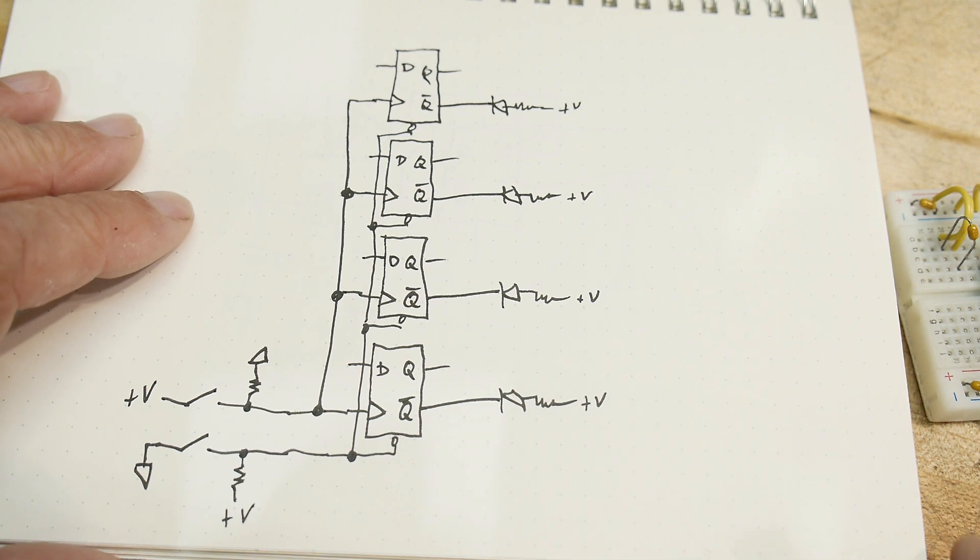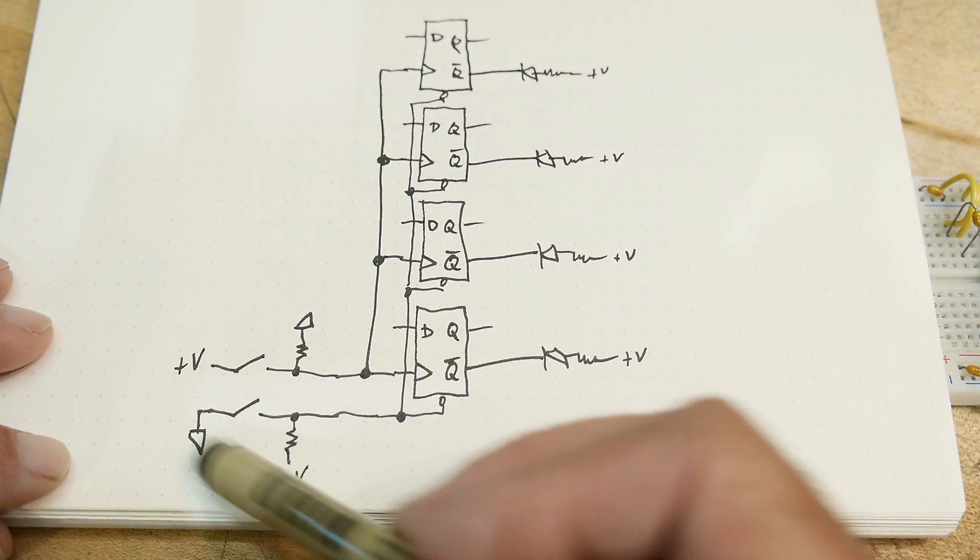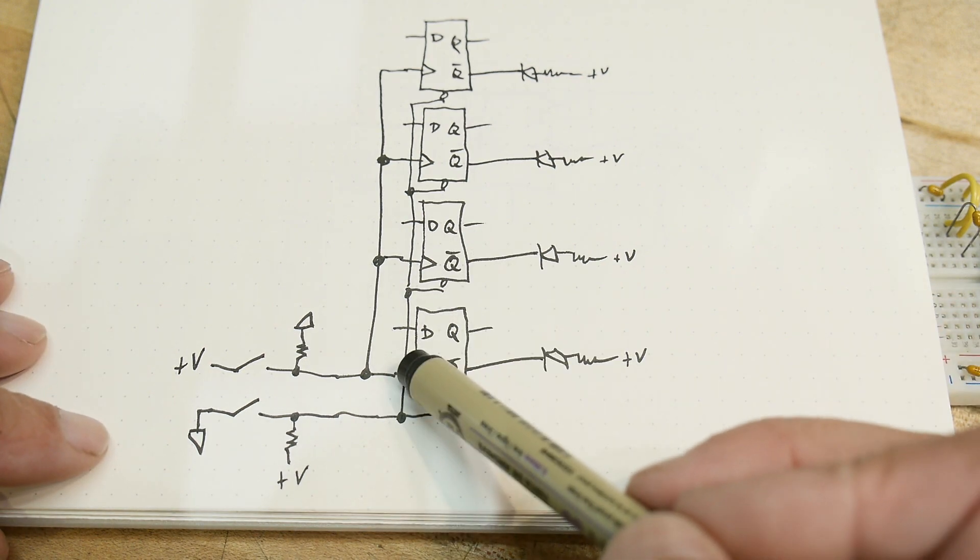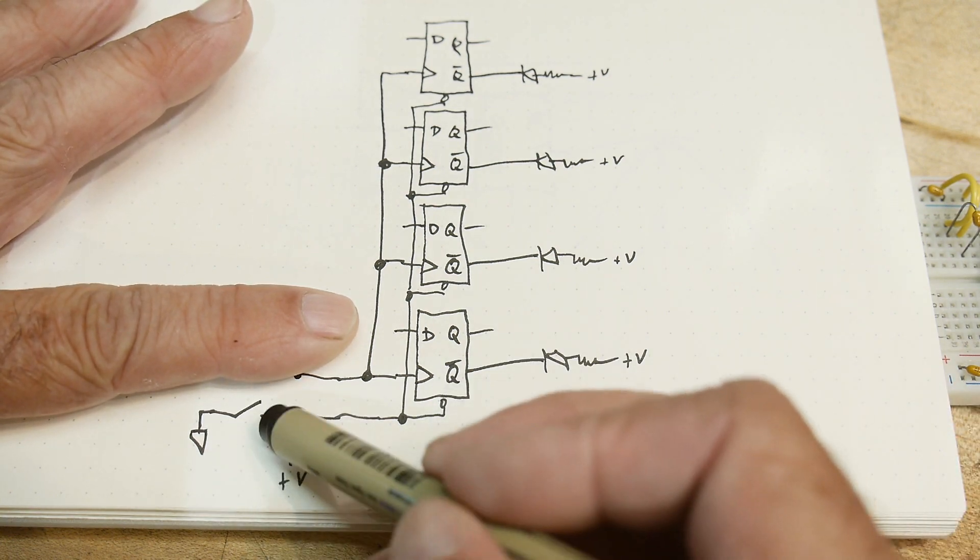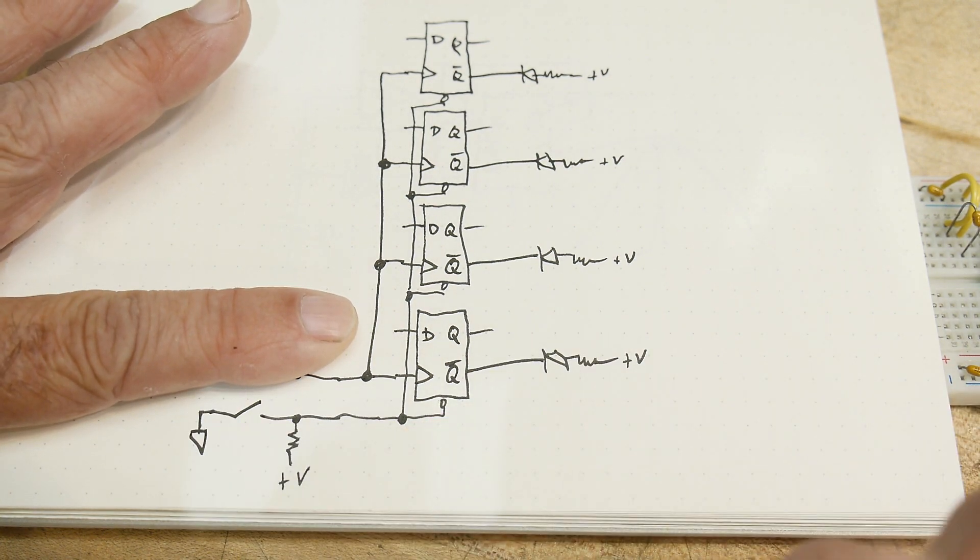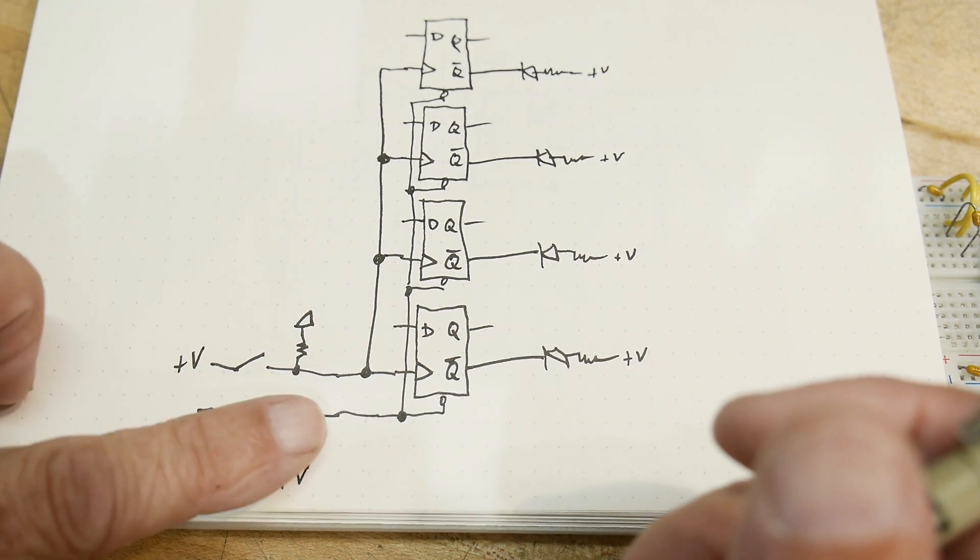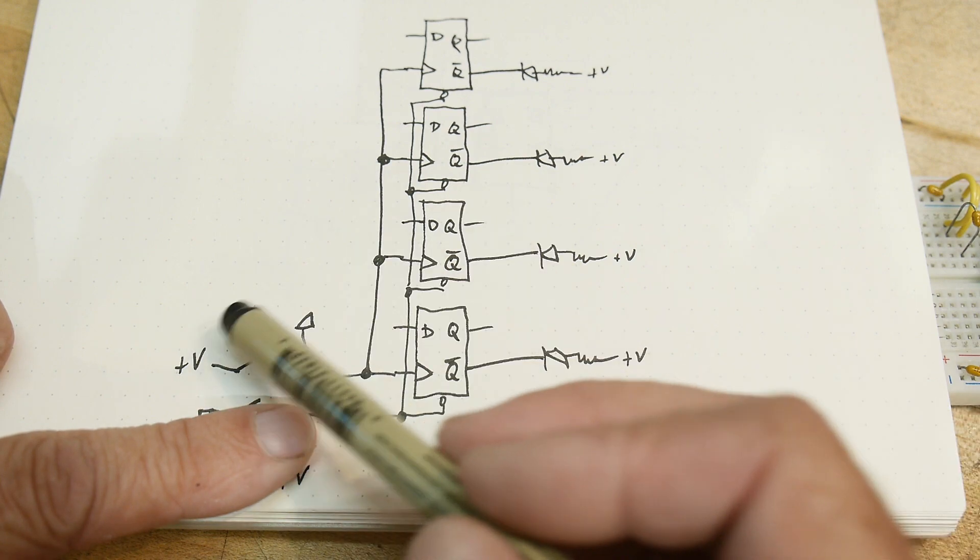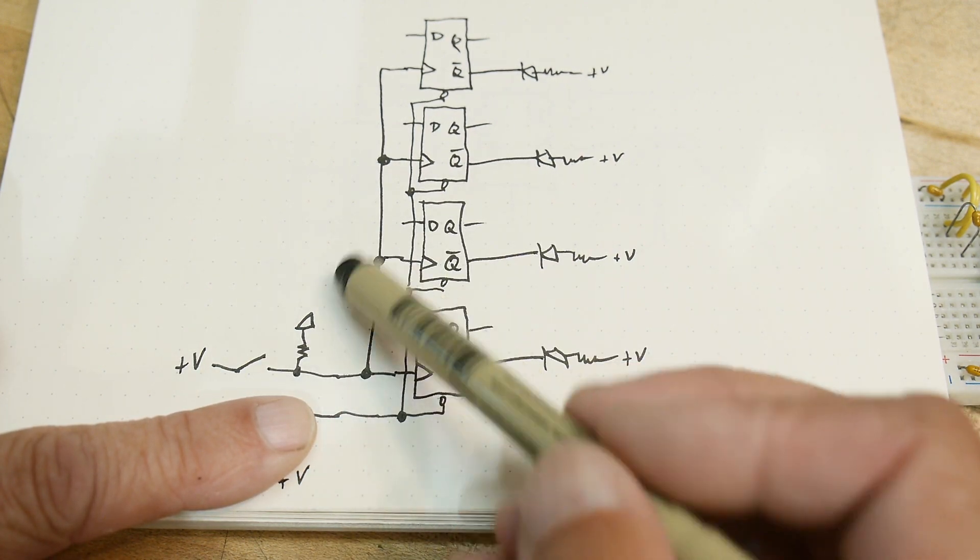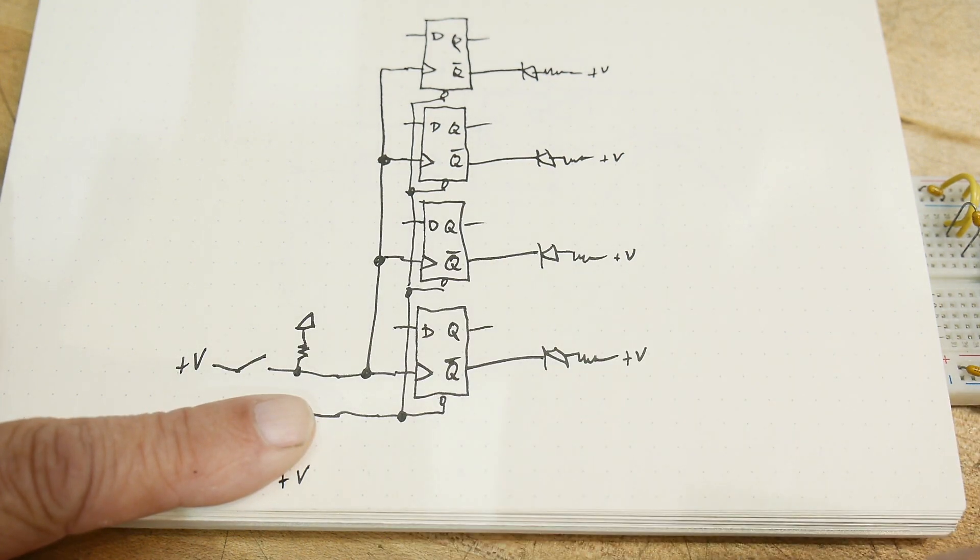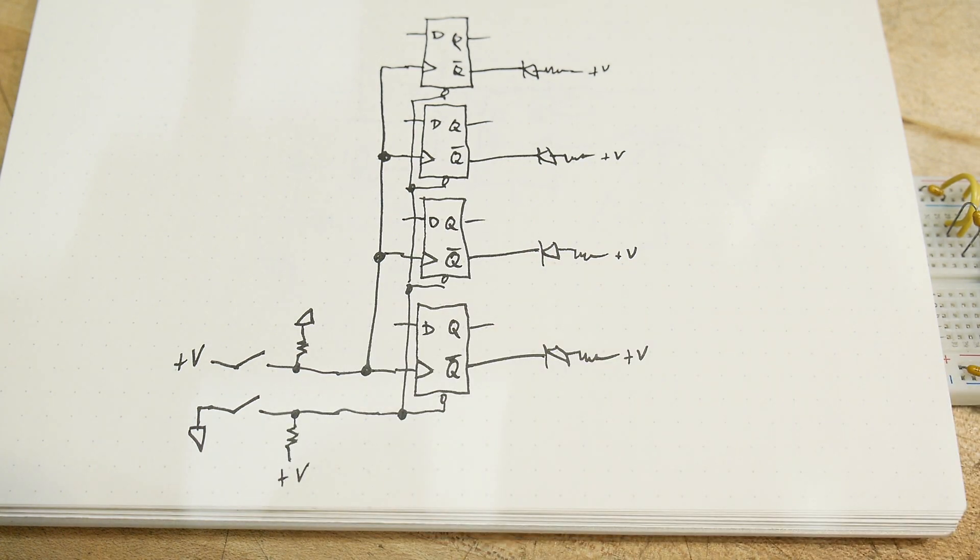All right. So, if we then have some ways of clocking it, we'll use switches to do the clocking. So, the clear function will be done by this down here. Normally, it will be high, and if we push the clear button, it will ground it, and it will clear the device. When we want a rising edge, normally, the clock input is low, and if we hit the button, we'll get a positive edge. It'll connect it to plus V. So, this is what we're going to use.